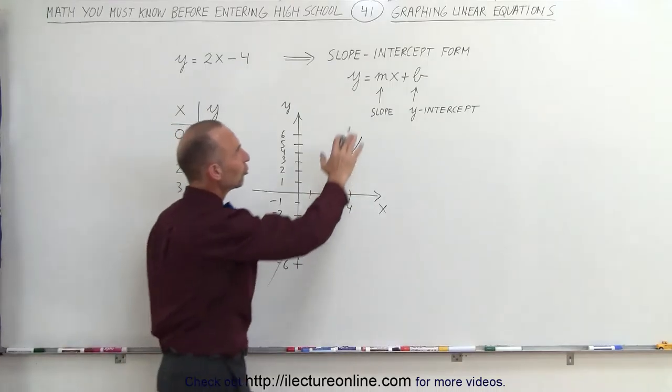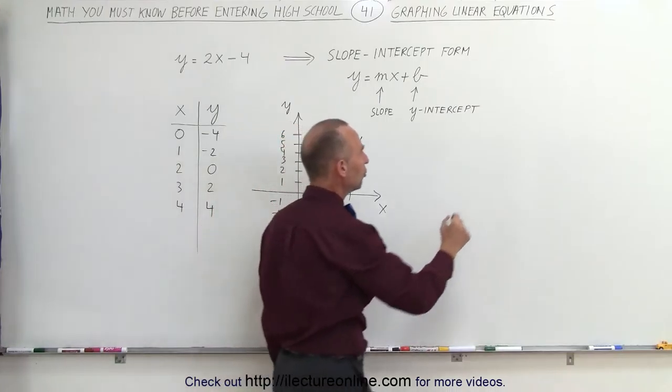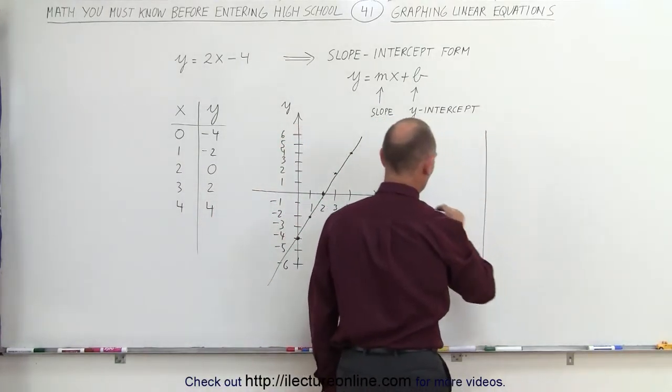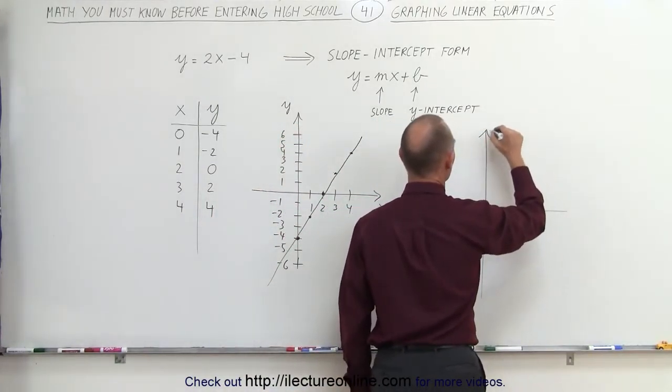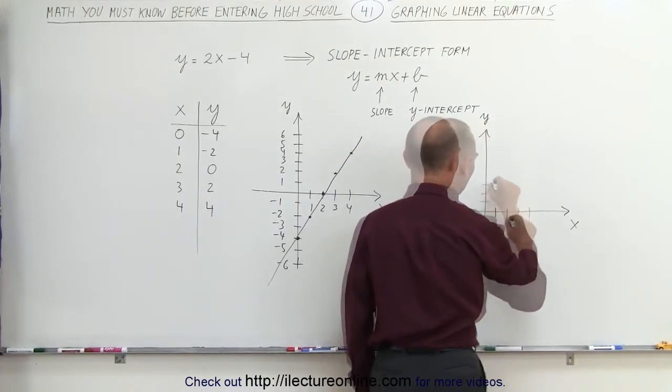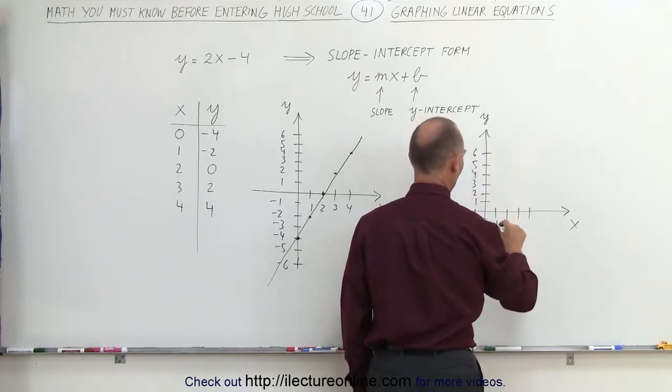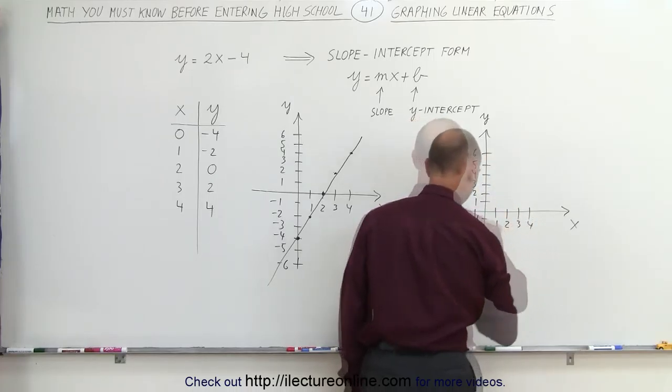We can also use what we call the slope-intercept form to graph linear equations. Again, what we can do is draw an xy coordinate system. There's my y-axis, there's my x-axis. And there's 1, 2, 3, 4. So we have 1, 2, 3, 4, 5, and 6. 1, 2, 3, 4. There we go.